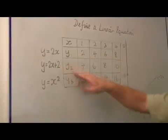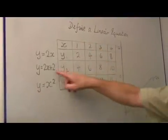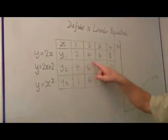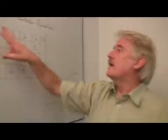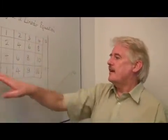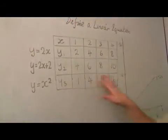2x plus 2 gives us the value 2 times x. 1's a 2, plus 2 gives 4. So 4, 6, 8, 10. So we're just evaluating y for each value of x. And here again, y equals x squared. 1, 4, 9, 16. The squares.